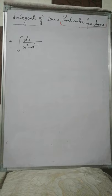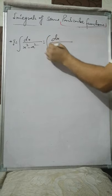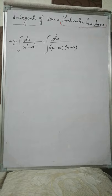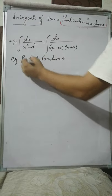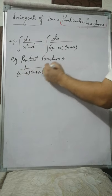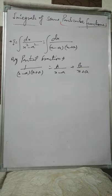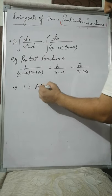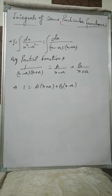We are continuing the topic of integrals of some particular functions. Let's prove the first one. We already know about partial fractions. The denominator can be factorized as (x minus a)(x plus a), so by partial fractions we write 1 over (x minus a)(x plus a) equals A over (x minus a) plus B over (x plus a).